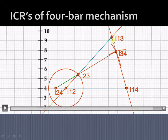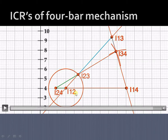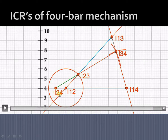So once again, to summarize: extend the line joining I₁₂ and I₂₃, and extend the line joining I₁₄ and I₃₄ — wherever they meet is I₁₃. Similarly, extend the line joining I₁₂ and I₁₄, and extend the line joining I₂₃ and I₃₄ — wherever they intersect is I₂₄.